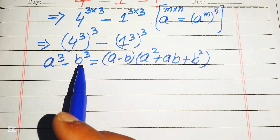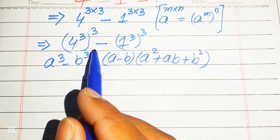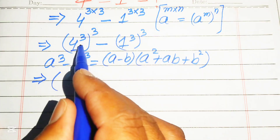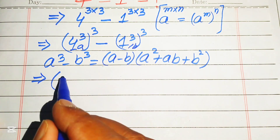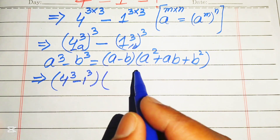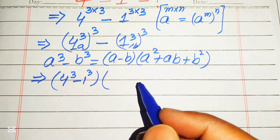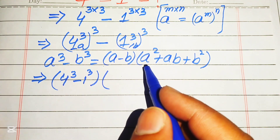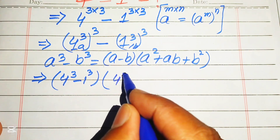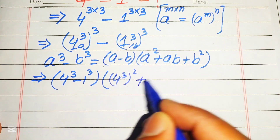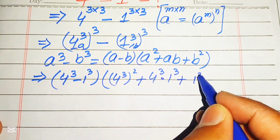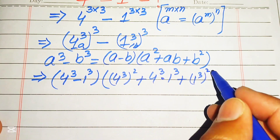We apply this formula to the above expression. Here our a is 4 cubed and our b is 1 cubed. So it is written as 4 cubed minus 1 cubed, times a squared plus ab plus b squared. Here a squared is 4 cubed whole squared, plus ab where a is 4 cubed and b is 1 cubed, plus b squared which is 1 cubed whole squared.